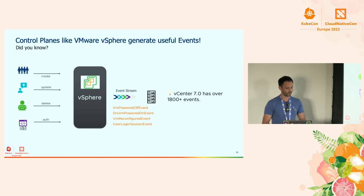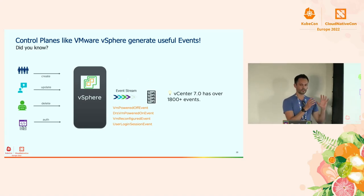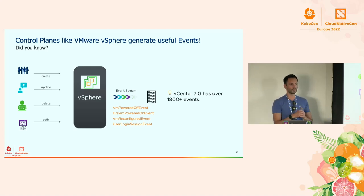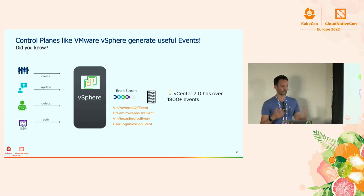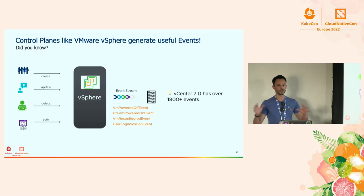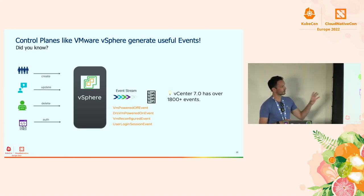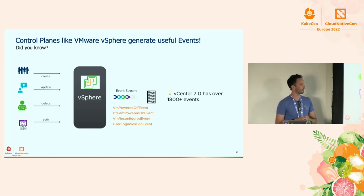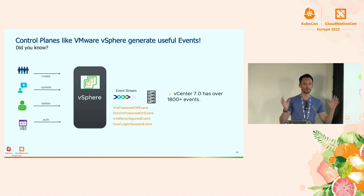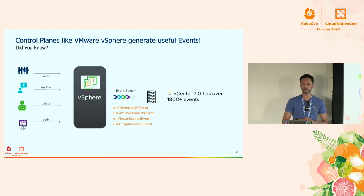vSphere and VMware vCenter — and a lot of products and services produce events, but vSphere happens to be the core one that administrators and core personas use a lot. Did you know that vSphere and vCenter alone in a standard setup — no plugins, no extensions installed — comes with already 1,800-plus events?